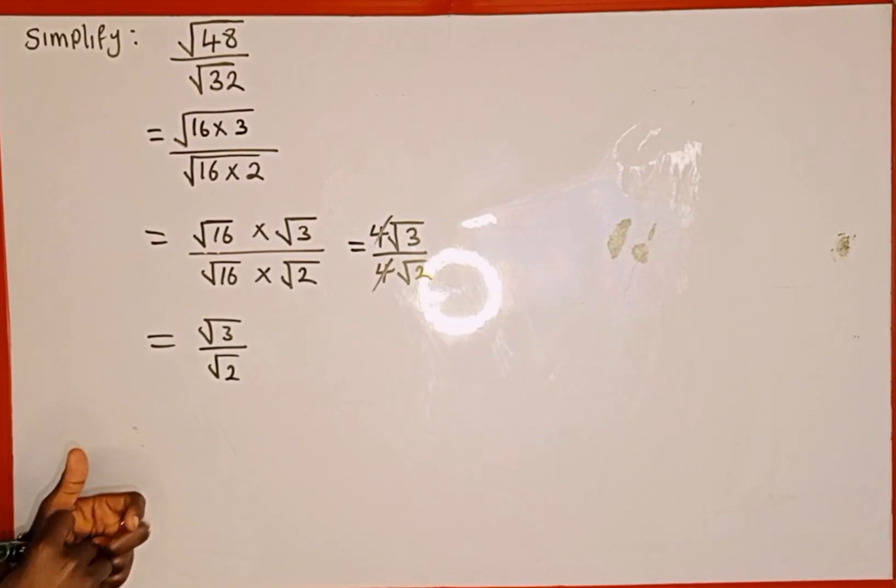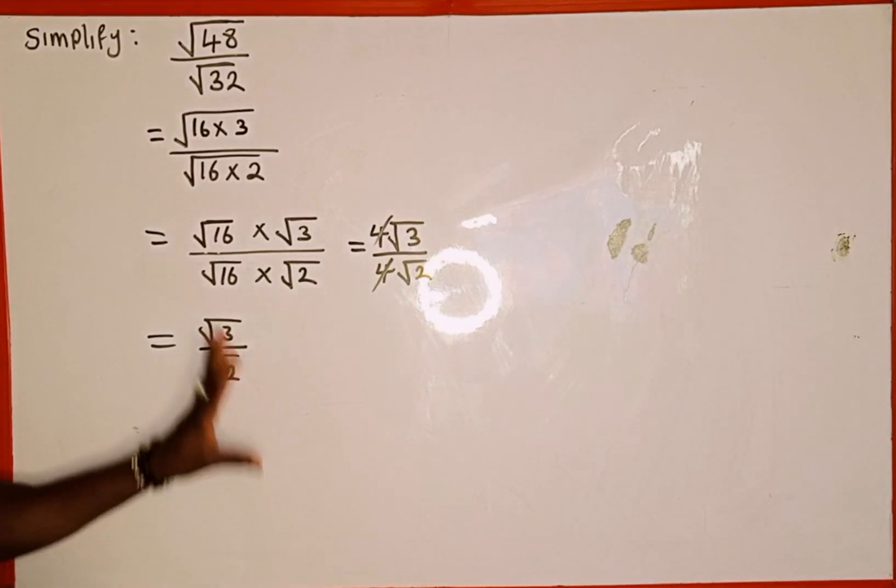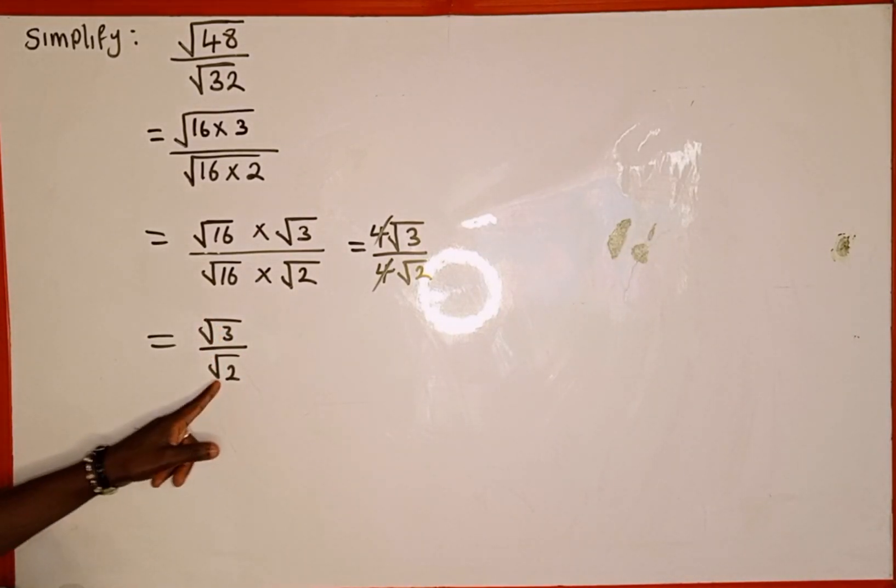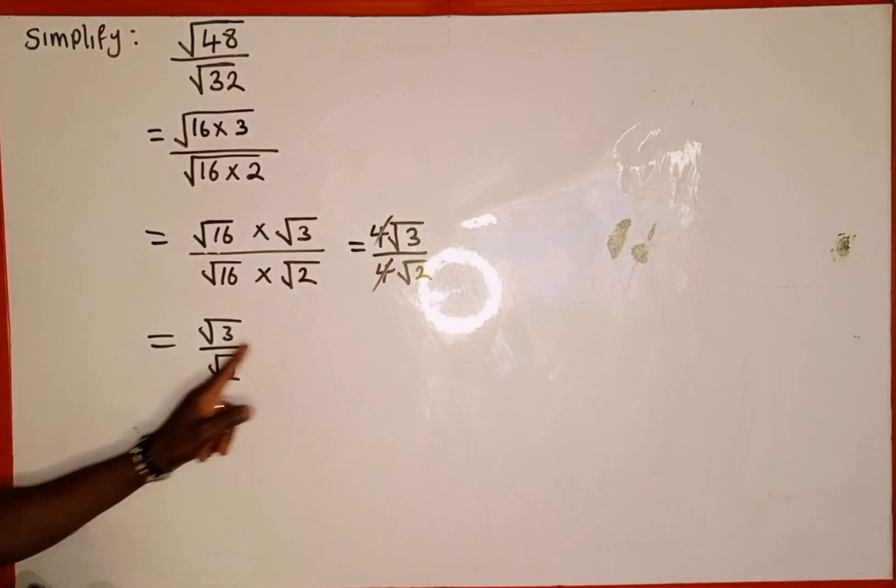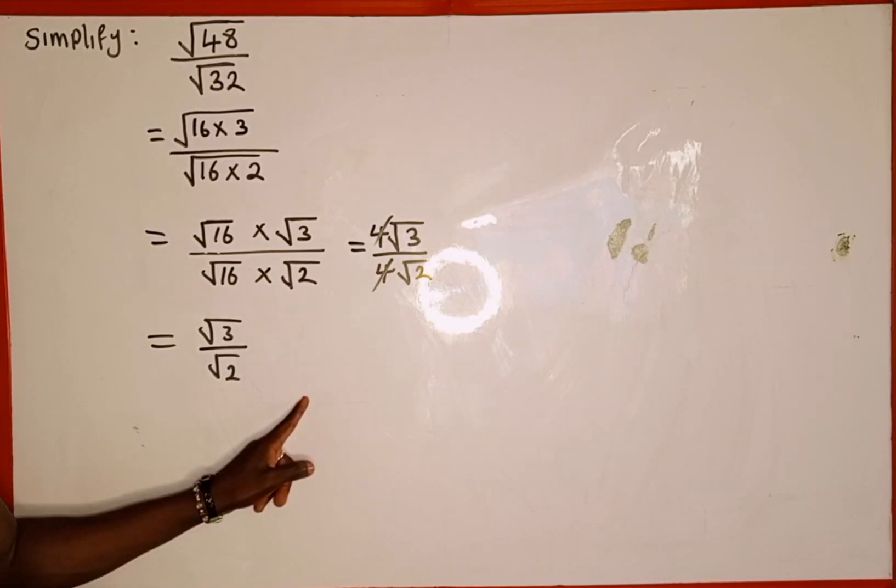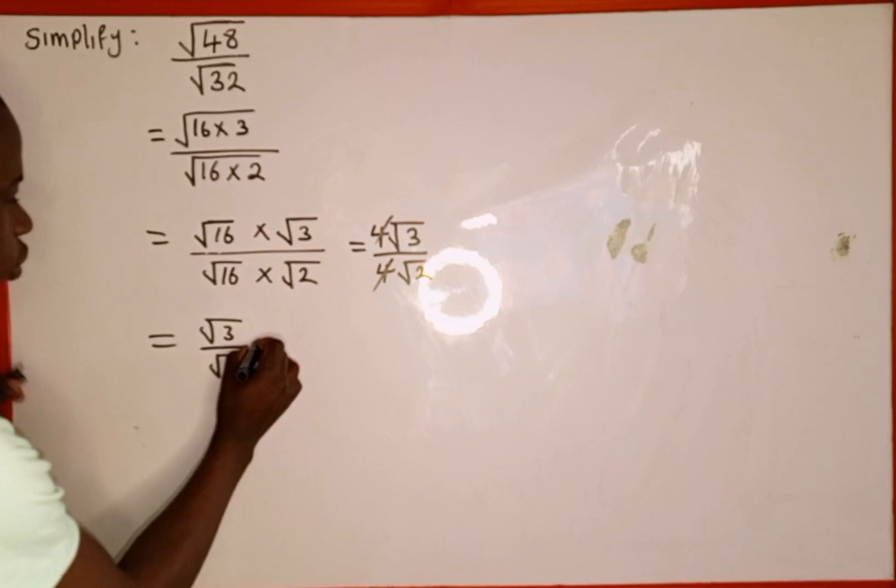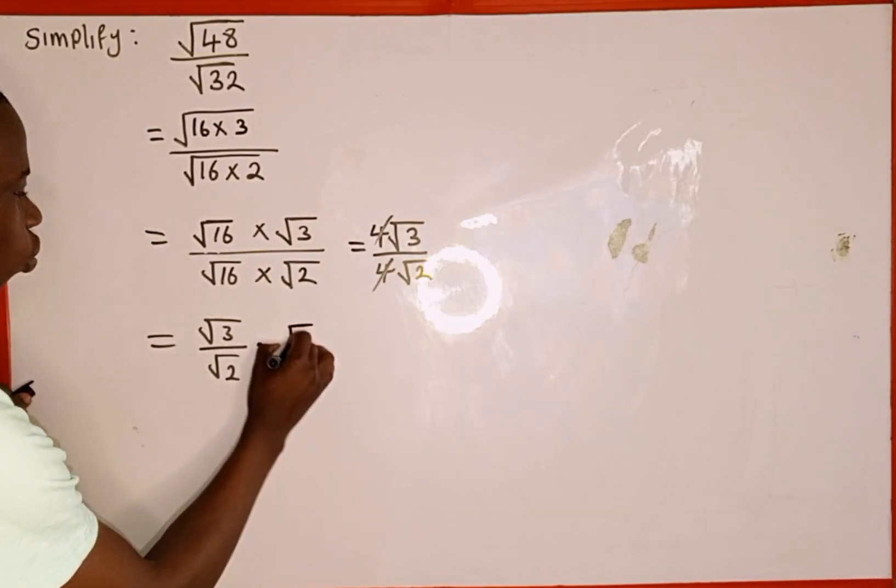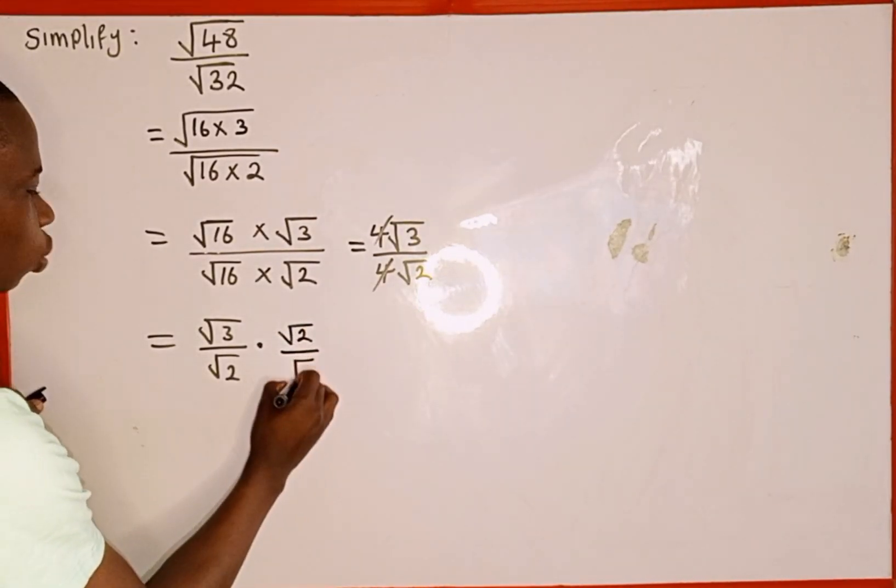So the next thing we're going to do is to rationalize this expression. Rationalization meaning we're going to use the denominator root 2 to multiply by what? Root 2 divided by root 2. So we're going to have what? Multiply by root 2 divided by root 2.